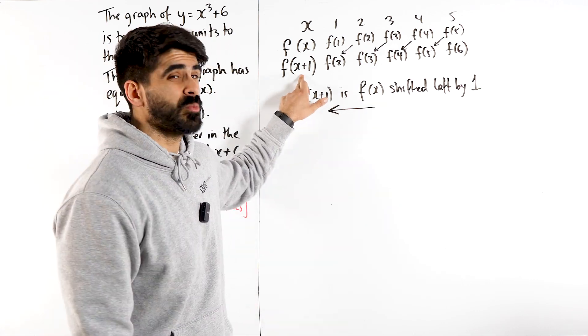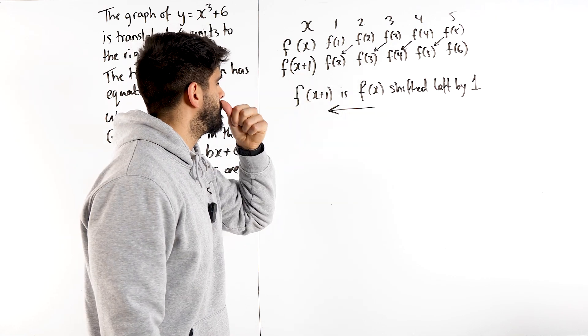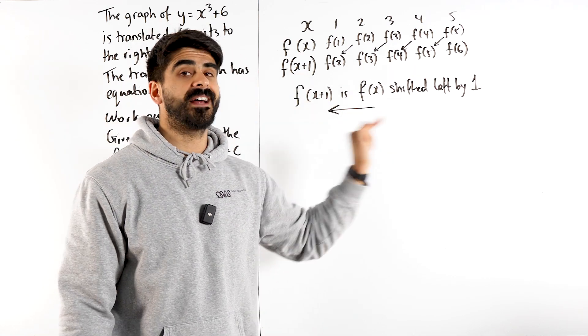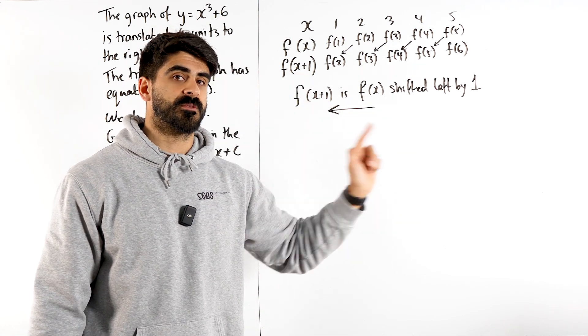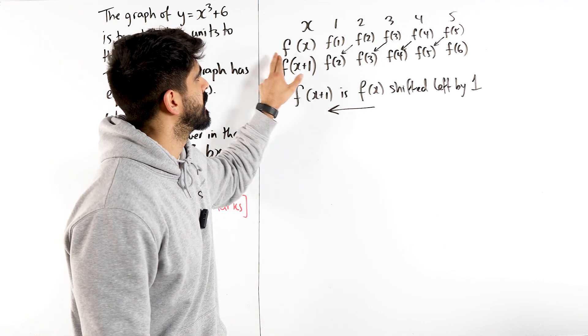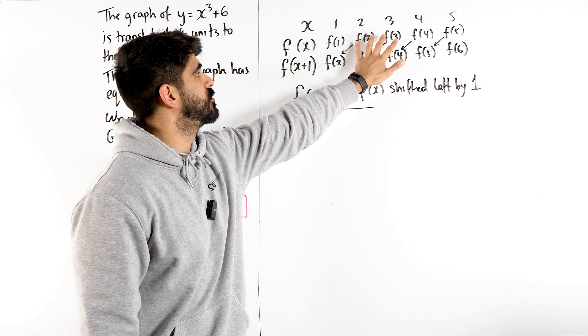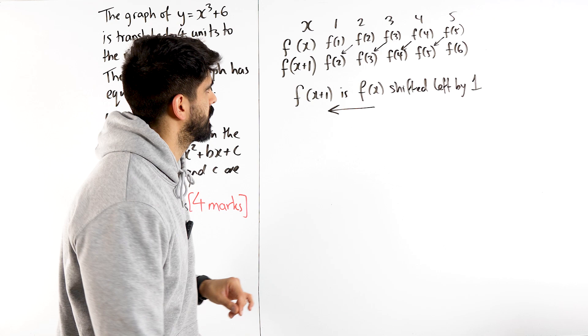So f of x plus 1, students think, oh, if you add 1, you just shift it to the right by 1. You're adding 1 to all of the x values, but that's not how it works. You're looking at the original and saying what you need to do to the original to get to these values.